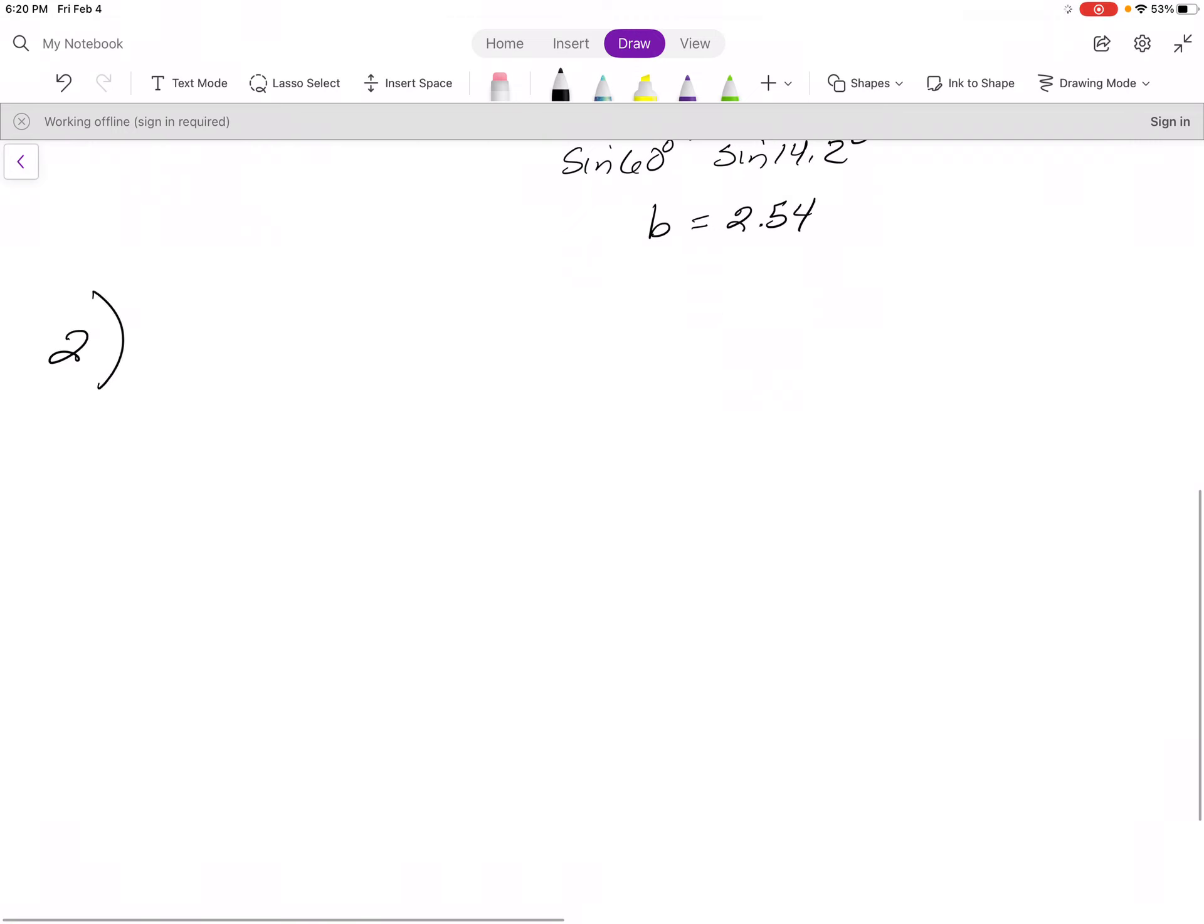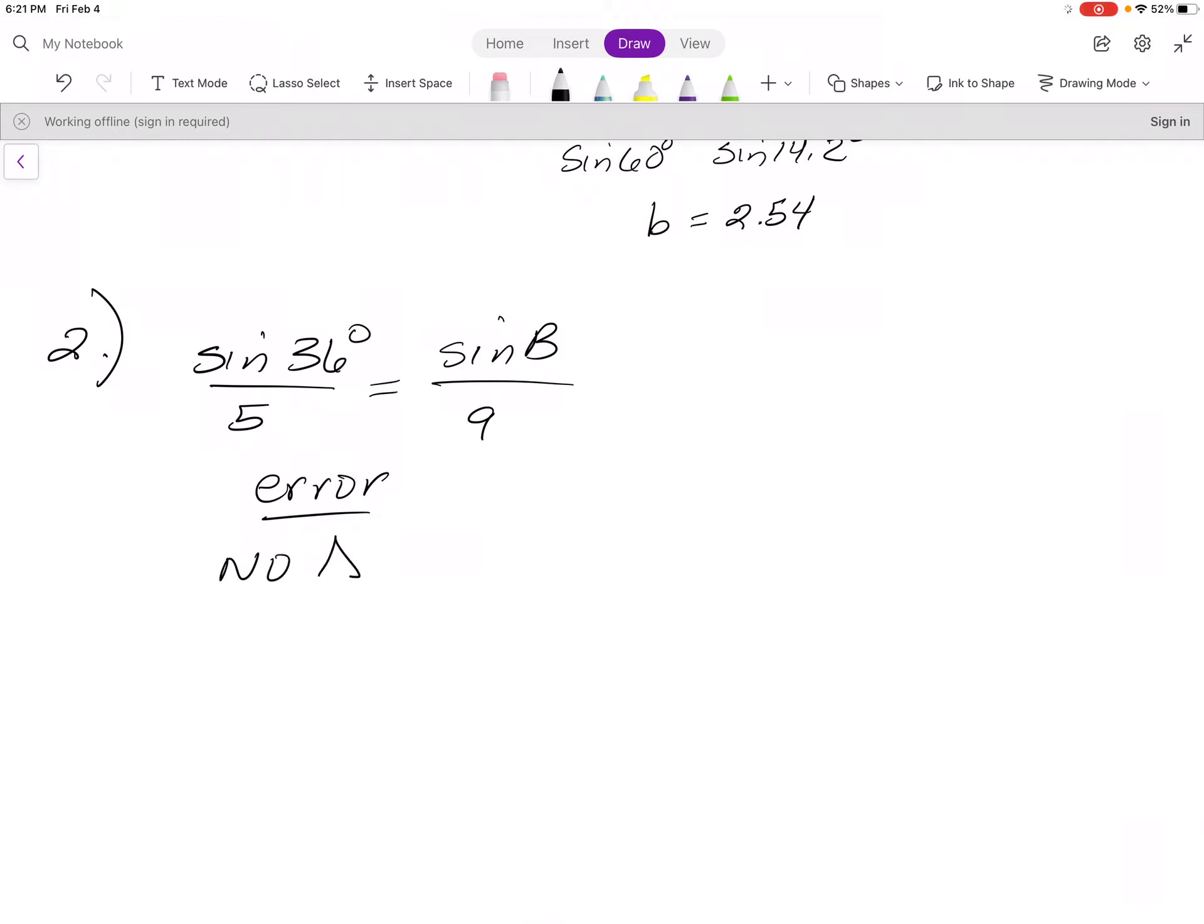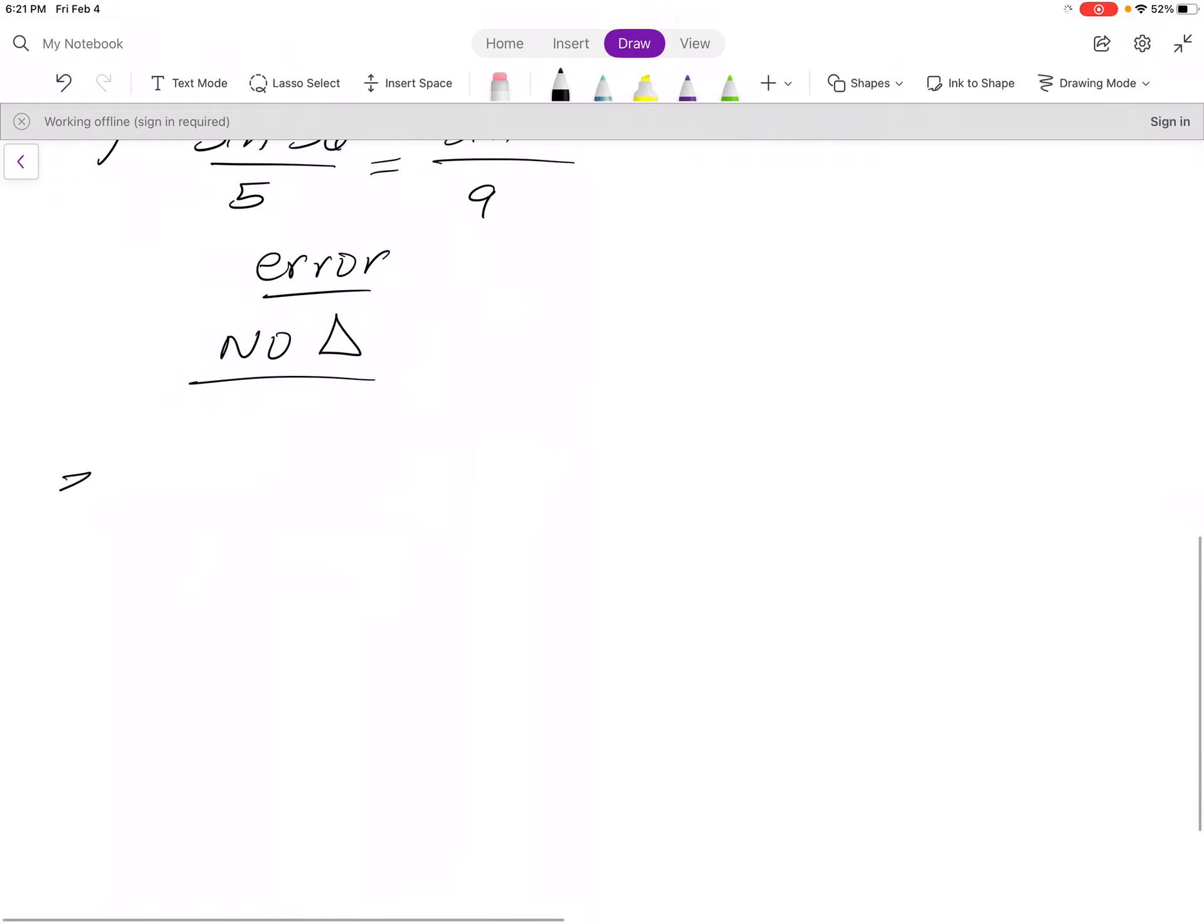Number two. Number two is a law of sines, again, because we have a pair. We have a and a. And so when you set this one up, even if you don't draw the picture, some of you are saying you don't like to, and some of you have started setting it up this way when you're solving for the angle, which I get that. When you cross multiply for this one and you try to inverse sine it, you're going to get an error for angle b. And so this is one of those that has no triangle possible. So you can just answer no solution, no triangle, impossible, anything like that.